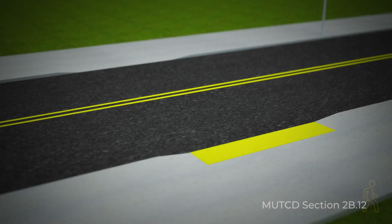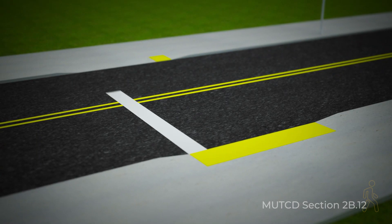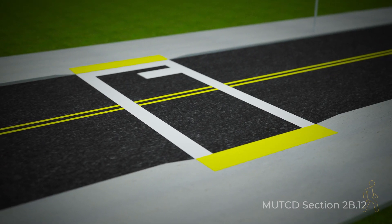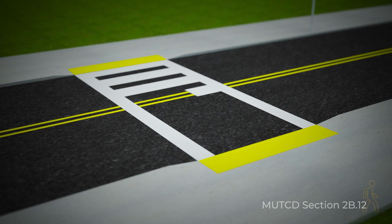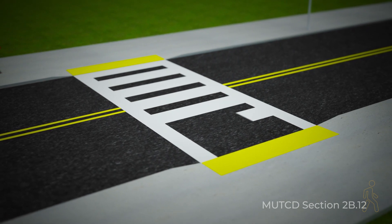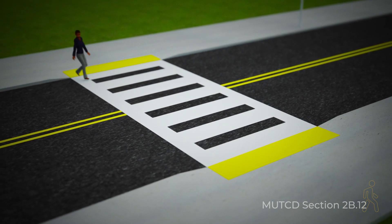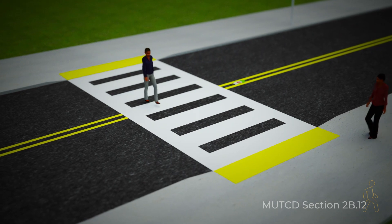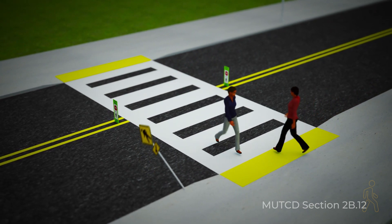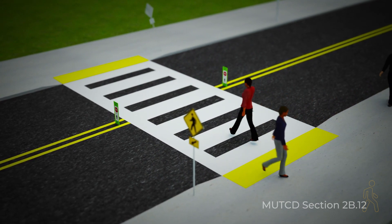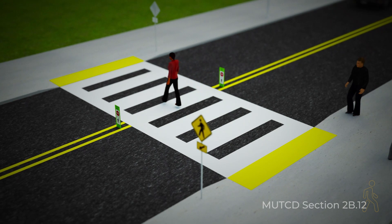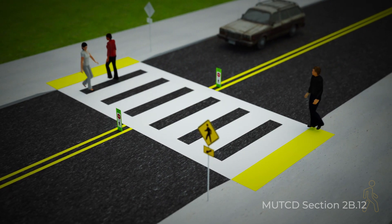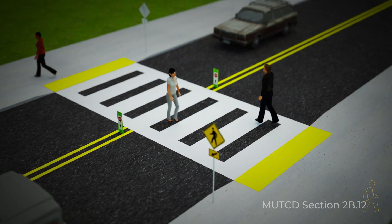Improved markings make crosswalks more visible to drivers than standard parallel lines, especially at a distance. In-street stop or yield to pedestrian signs can also be placed in the roadway on the center line, lane line, or on a median island to remind road users of pedestrian right-of-way.